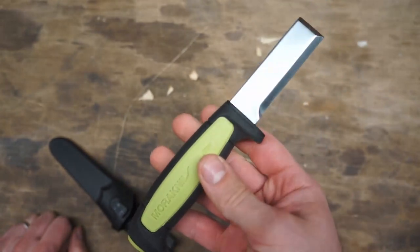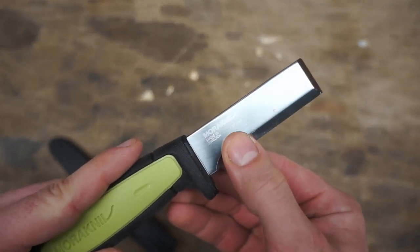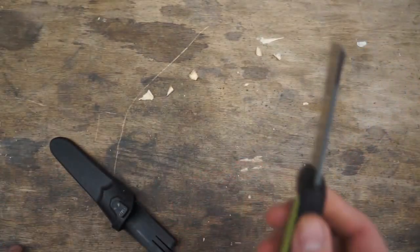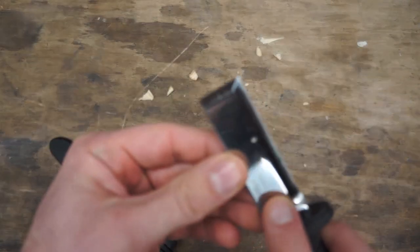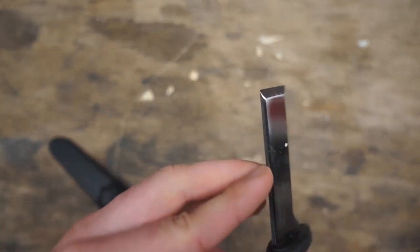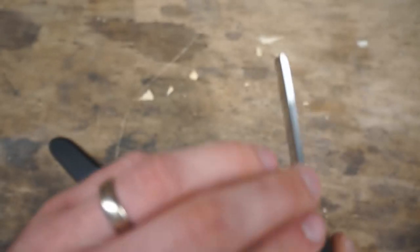Now as far as edge retention, this is the standard high carbon steel from Mora. That should hold an edge very well, especially given the point that it is a chisel grind. So it's not going to be a very weak edged profile here, and it's going to hold up very well.